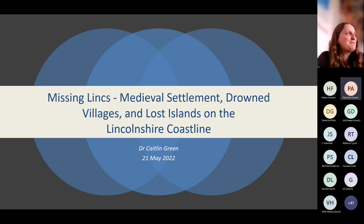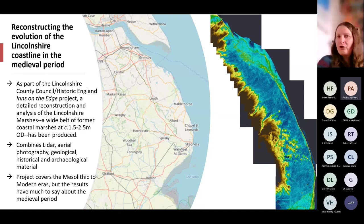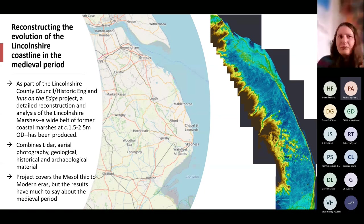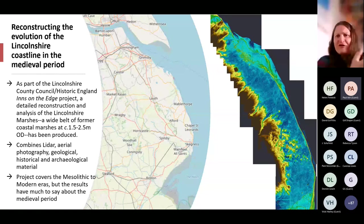Missing links — it's a terrible pun that somebody on Twitter came up with a few years back. I just thought it was wonderful for a title. I'm going to give you a bit of a gallop today. I've been working on something called the Inns on the Edge project — a Lincolnshire County Council Historic England project looking from Grimsby down to Boston at the origins and fate of the pubs and inns along the coastline. As part of that, they decided they wanted a detailed reconstruction analysis of the Lincolnshire marshes, which runs down that area.